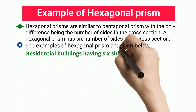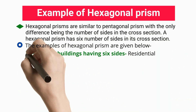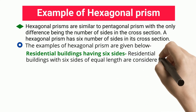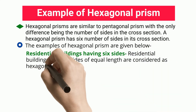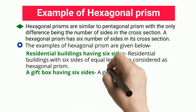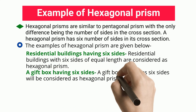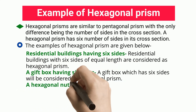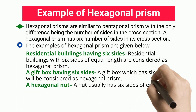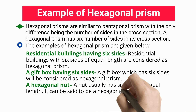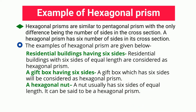Residential buildings having six sides: residential buildings with six sides of equal length are considered as hexagonal prisms. A gift box having six sides will be considered as a hexagonal prism. A hexagonal nut: a nut usually has six sides of equal length and can be said to be a hexagonal prism.